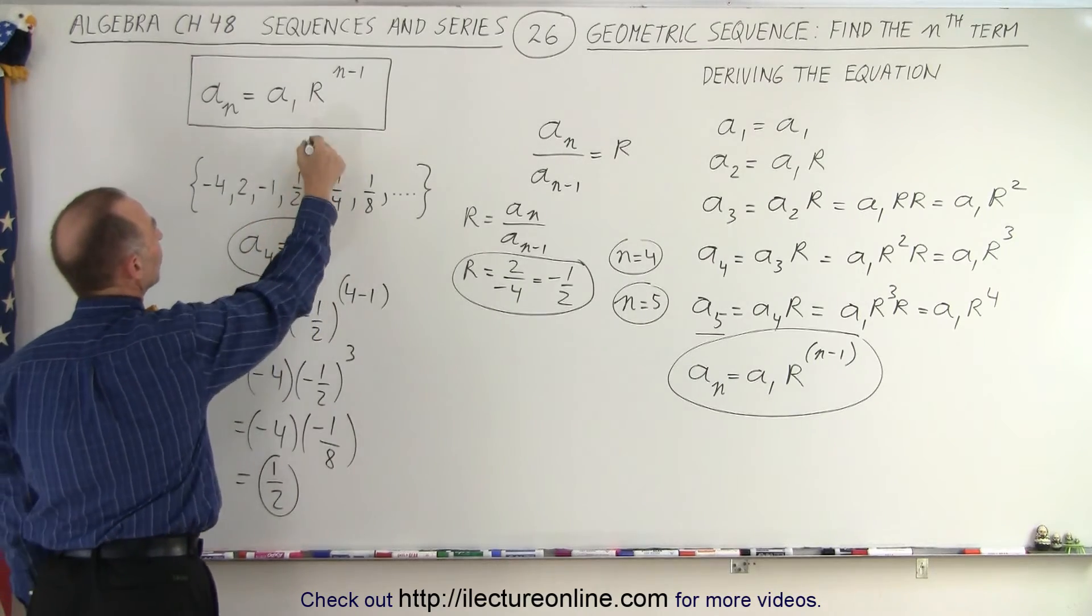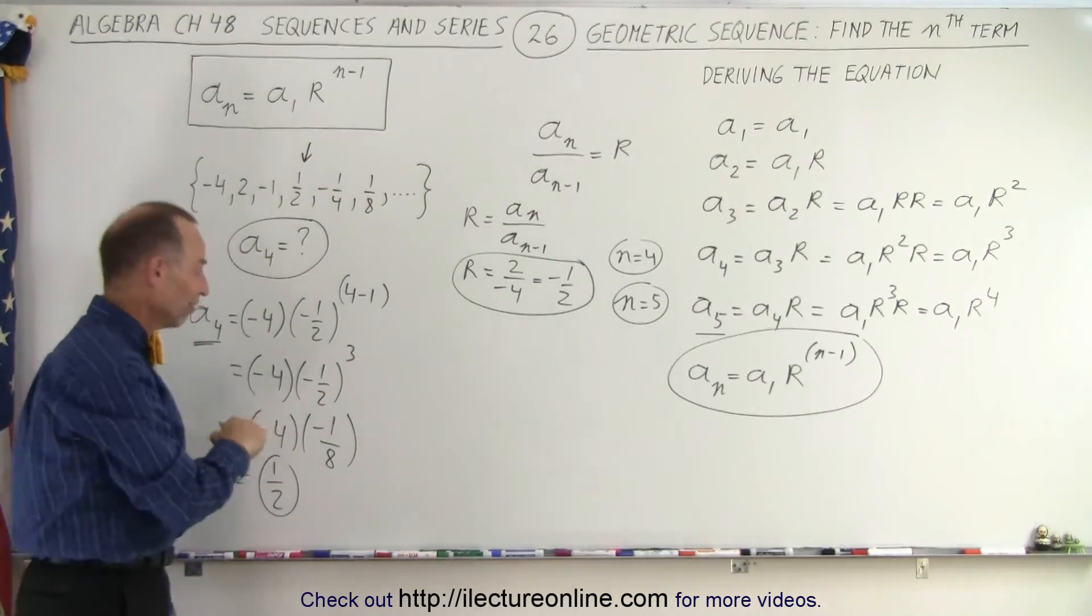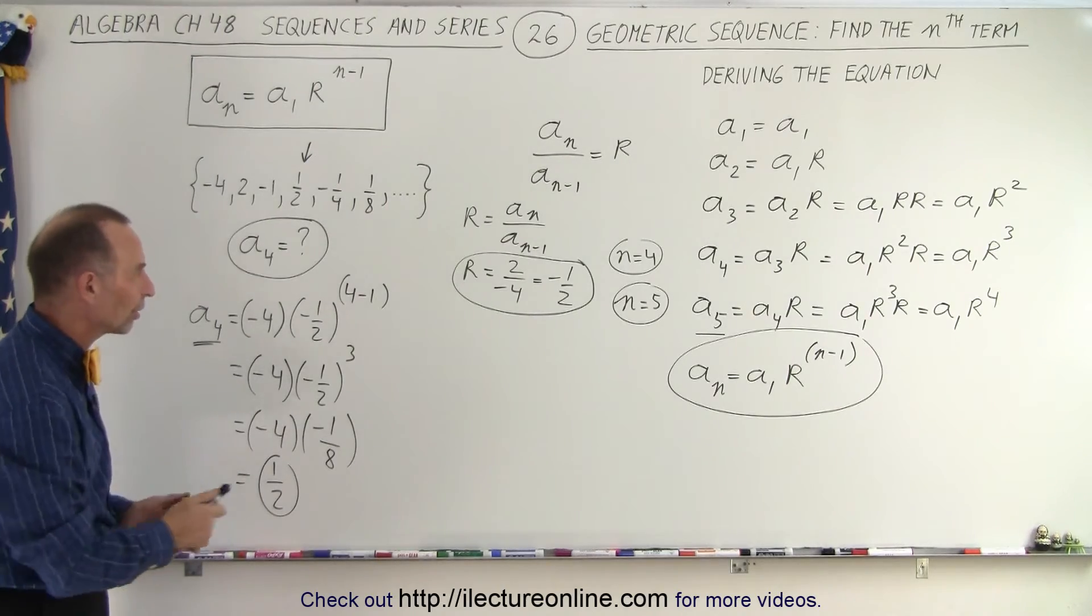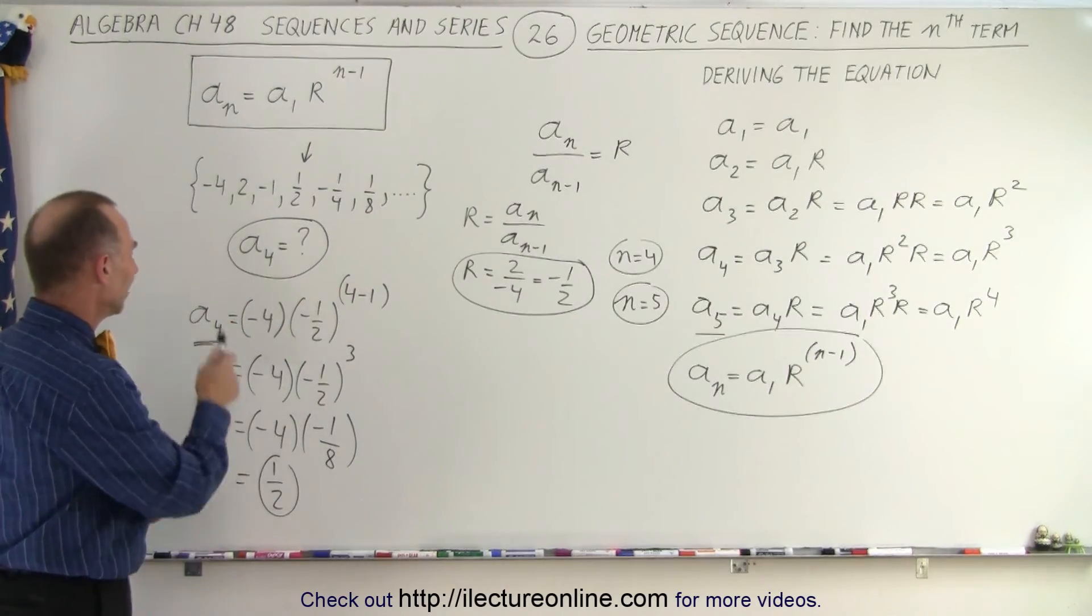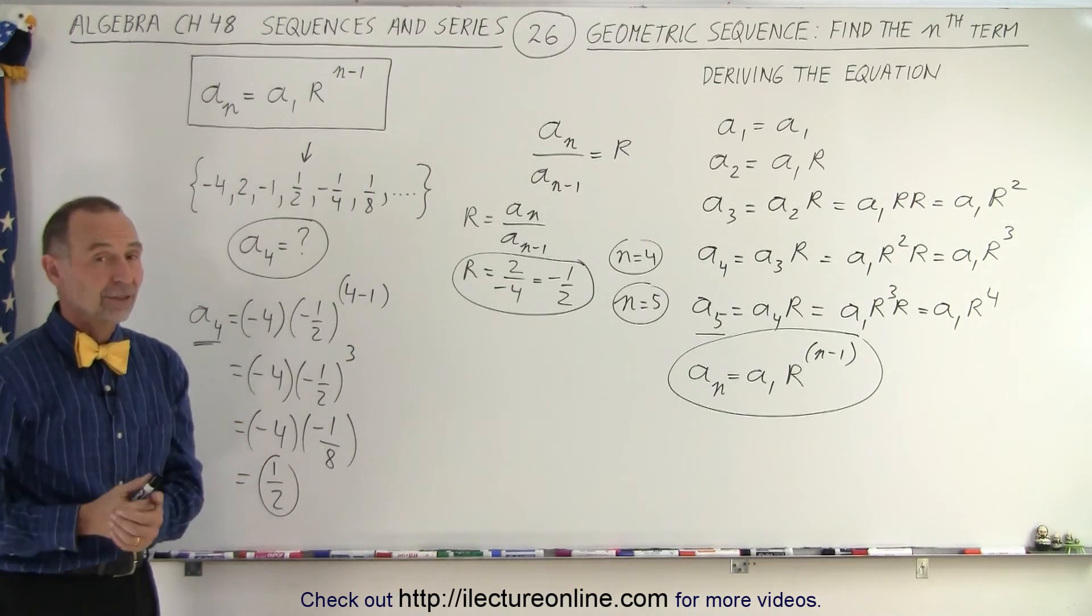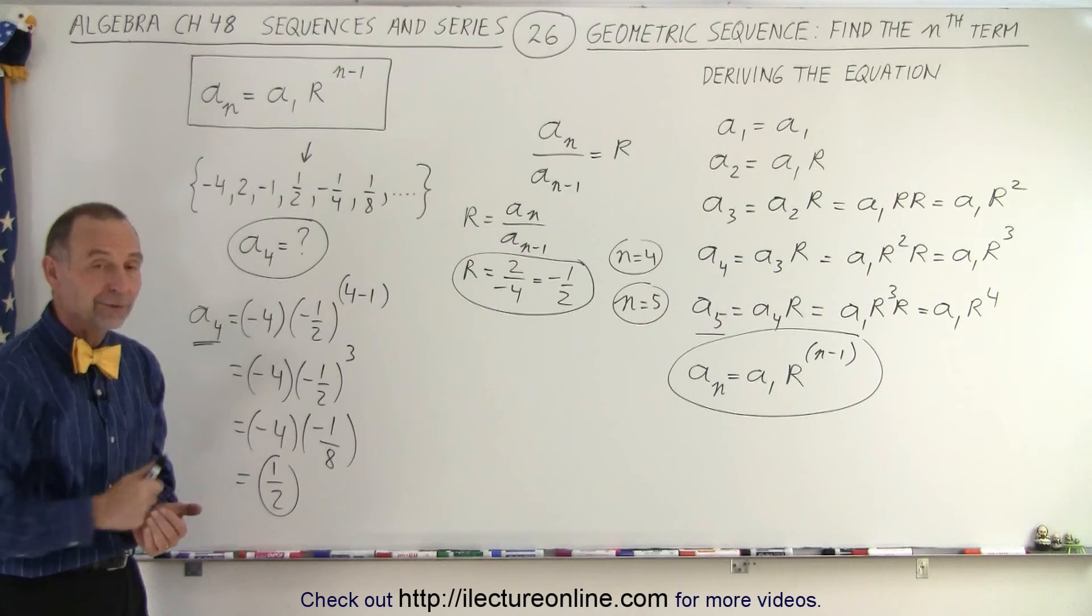1, 2, 3, 4. Notice, yes indeed, I got the value I was looking for. And you can see that the equation does indeed work. First you find the common ratio, then you plug it into the equation to get the nth term of that particular sequence. And that is how it's done.